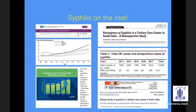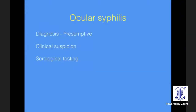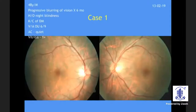Dr. Alok Sen, a retinal surgeon, chose the topic of ocular syphilis because he has seen more than 30 cases in the last couple of years - more than he had seen in almost a decade. Ocular syphilis diagnosis is mostly presumptive, based on clinical suspicion and serological testing. These cases are more often missed, and late diagnosis leads to poor outcomes, whereas early diagnosis results in generally good outcomes.